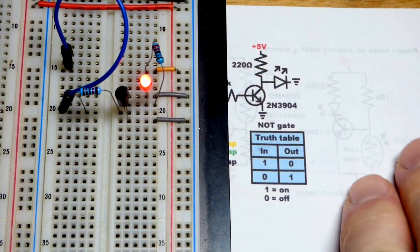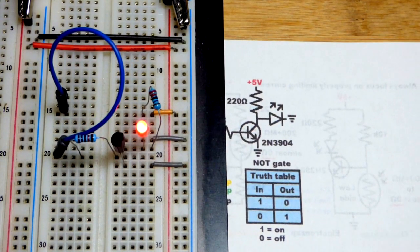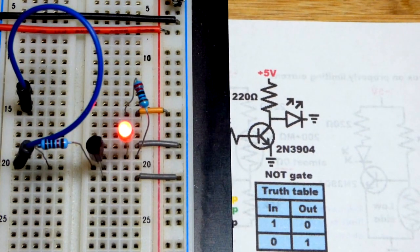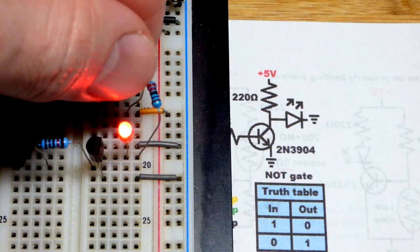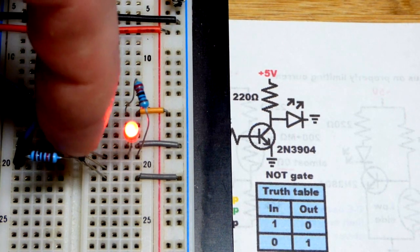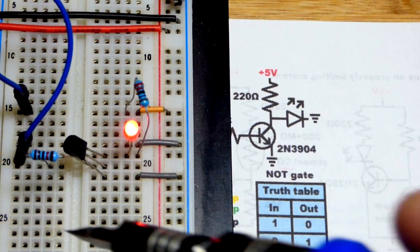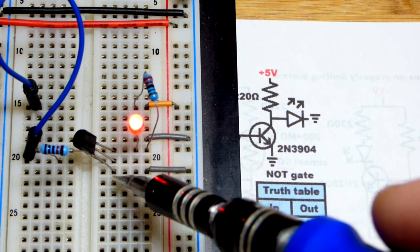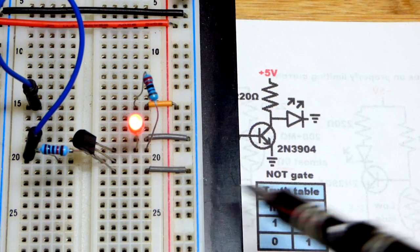You can see here that we have the 220-ohm resistor, the positive supply, and it's coming to the collector. This is a 2N3904, flat side to the right. We've got collector on top, base in the middle, and emitter at the bottom.